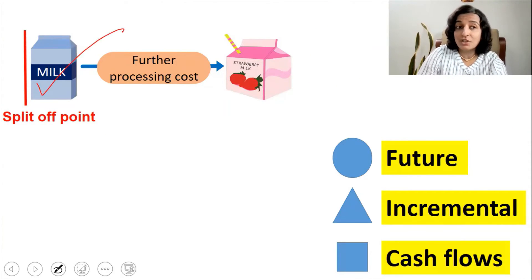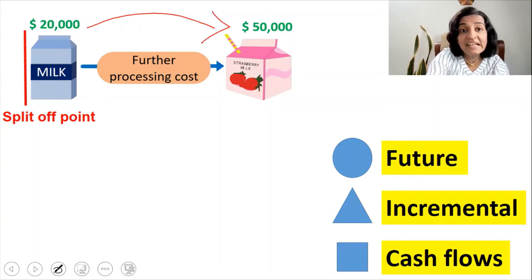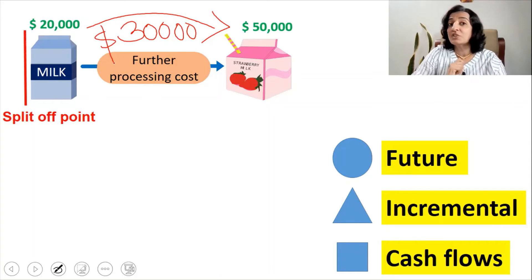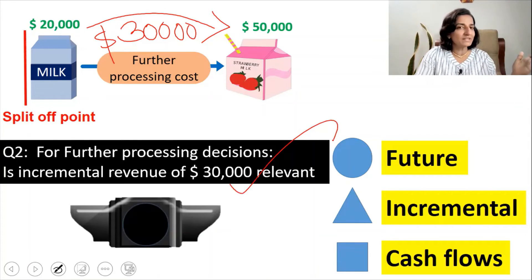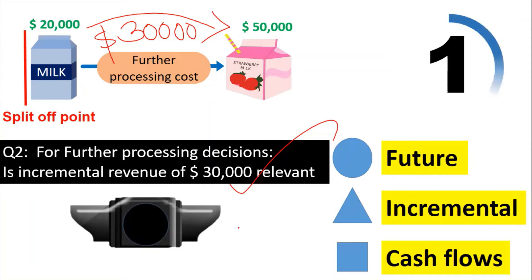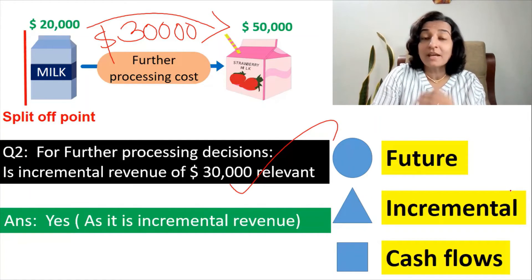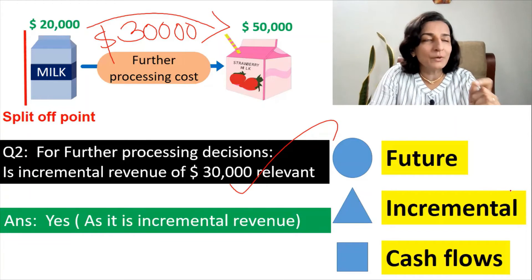If you sell the milk as such, you get $20,000. If you further process, the amount you get when you sell the strawberry milk is $50,000 — meaning you have an increase in revenue of $30,000 because of your decision to further process. The question is: for further processing decisions, is the incremental revenue of $30,000 relevant? It's the green light. Yes — you should include the $30,000 as relevant because it is an incremental revenue; because of your decision, you are getting additional revenue.